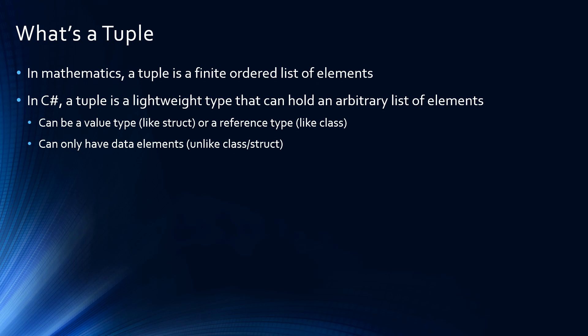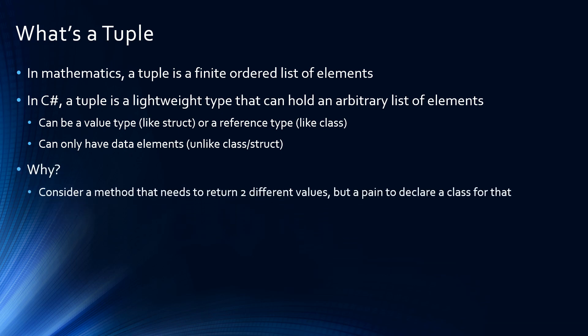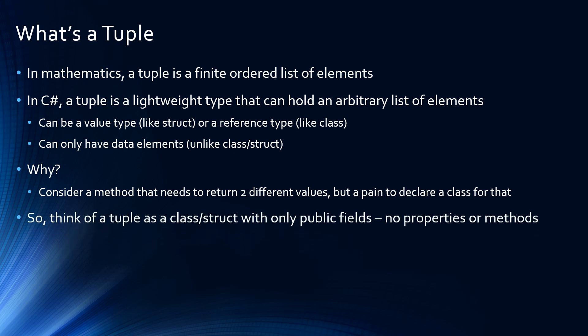It can be a value type, and that's the language default as of version 7. It can also be a reference type, like a class. The difference with a tuple, however, is that it only contains public fields. It doesn't have methods or properties. Mainly, we're going to run into tuples as a return from a method — when a method needs to return more than one object, rather than returning an array of objects, we can return a tuple. So think about a tuple as the same as a struct with all public fields and no methods and no properties.